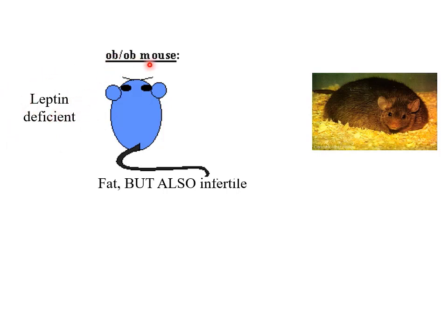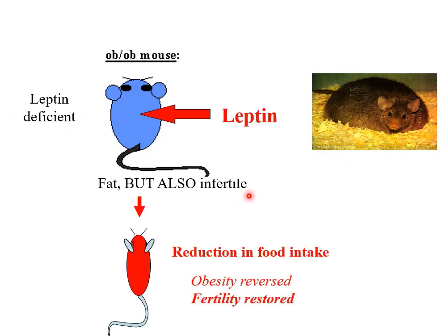This very fat mouse turned out to have a defective ob gene, which should produce a hormone called leptin. The ob/ob mouse, due to this recessive defect, was leptin deficient. That caused them to be very fat, but they were also infertile. When leptin was given back to these leptin-deficient mice, there was a reduction in food intake, they lost weight, and their fertility was restored.